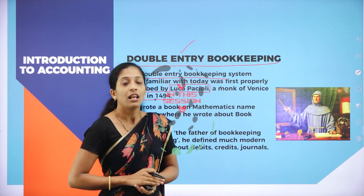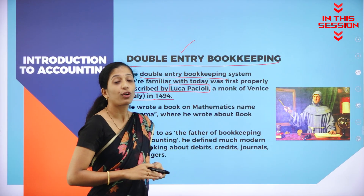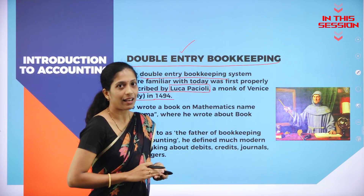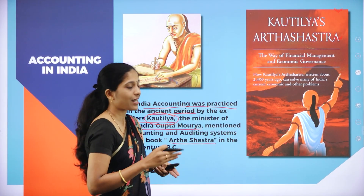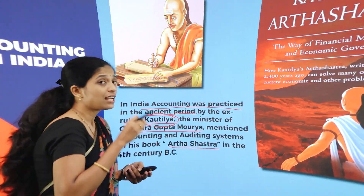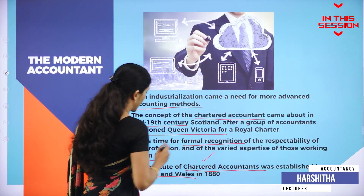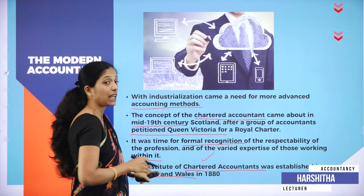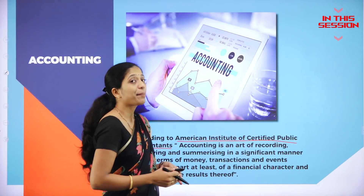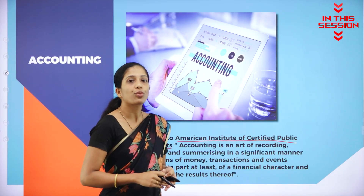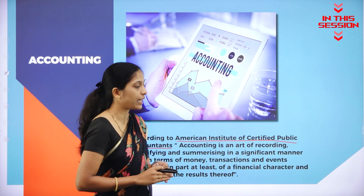So it was introduced by Luca Pacioli in 1494 in Italy. You know about the popular book Arthashastra which is written by Kautilya. This was when the Chartered Accountant was established in England and Wales in 1880. How has the American Institute of Certified Public Accountant defined accounting?